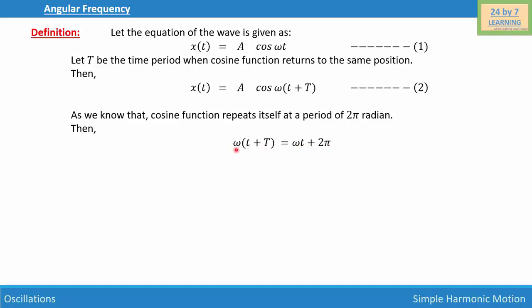If we simplify, we distribute ω inside the bracket and write ωt plus ωT equals ωt plus 2π.